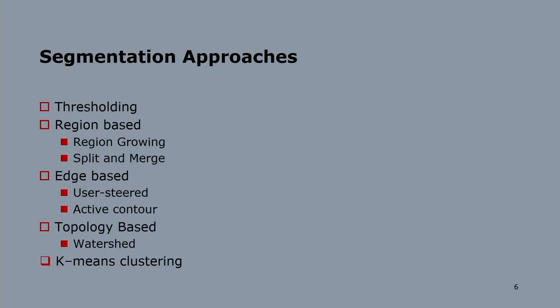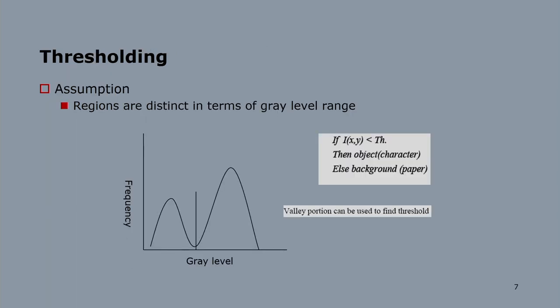In this class I will discuss these techniques: one is the thresholding technique, one is the region-based technique — that is the region-growing technique — another is the split and merge technique, and for the edge-based technique I will discuss the active contour-based technique. For the topology-based approach I will discuss the watershed algorithm, and finally the k-means clustering algorithm for image segmentation.